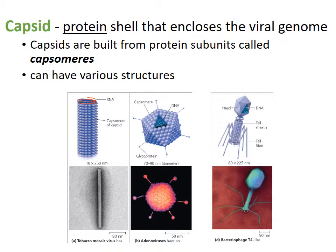The capsid is a protein shell that encloses the viral genome. Capsids are built from protein subunits called capsomeres, and they can have various structures. One example is a bacteriophage — those viruses that infect bacteria.